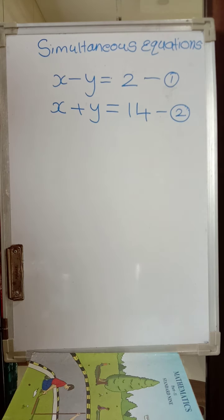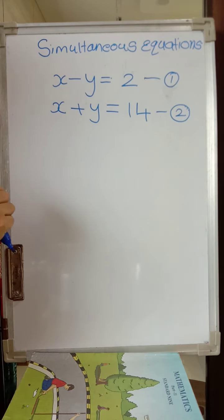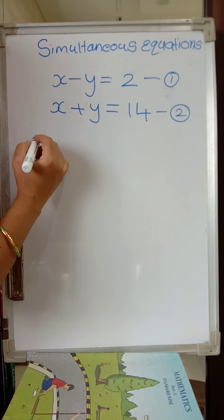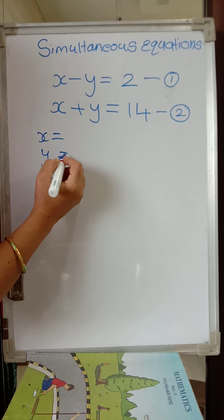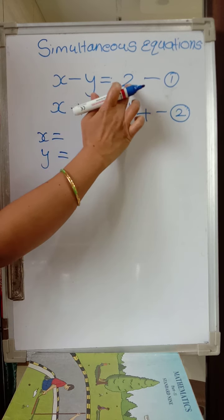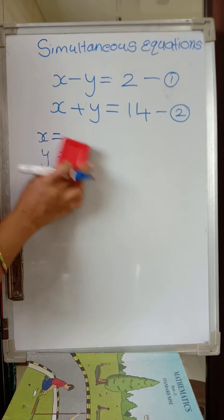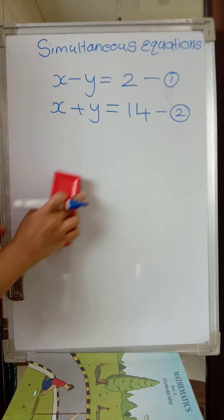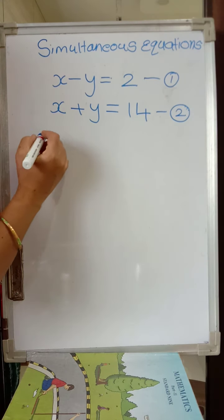Now, what do you mean by solution of the equations? Take x minus y is equal to 2. How many pairs can we write — what is x and what is y — such that the answer is 2? x should be greater and y should be smaller. You have so many solutions. Any two numbers whose subtraction is 2 — for example, x is 4 and y is 2.